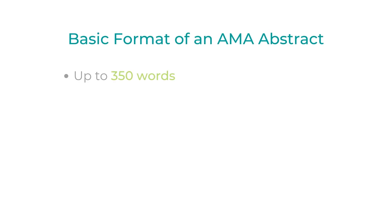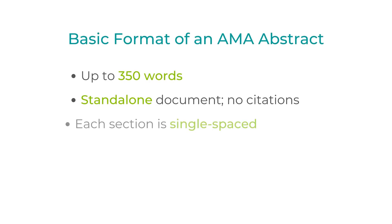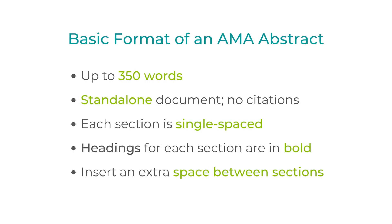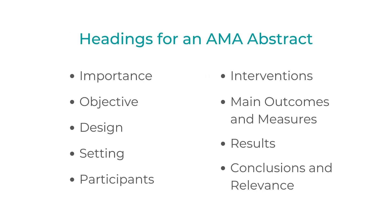First, the basic format. A structured AMA abstract is generally expected to be up to 350 words. In an article, the statements you make would normally be supported by a thorough citation, but an abstract is meant to be a standalone document, so it won't be referring to outside sources. If the reader wants to know the evidence behind your abstract, they should be able to find that in your longer write-up. It must also be single-spaced, and its section headings must be in bold. Directly after each section heading is a description that fulfills the purpose of the heading, followed by a space and then the next section heading.